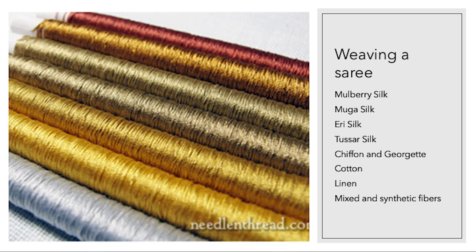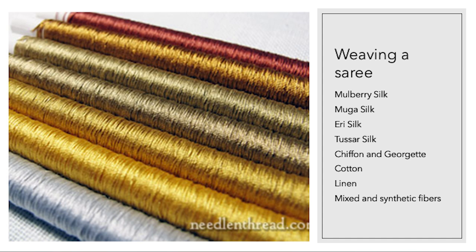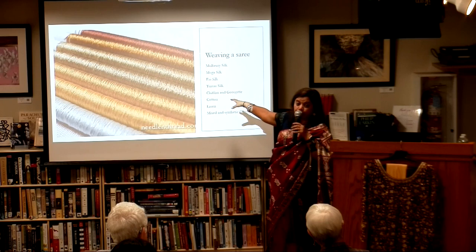Originally only cotton was available in India, but the Chinese brought silk to India. India now has about four different kinds of silk: mulberry, muga, eri, and tassar. They all come from different types of silkworms. Eri is the easiest name to remember — it comes from the word eera, the Assamese name for castor. These little worms eat castor leaves and produce the silk, and each type has a distinctive texture.